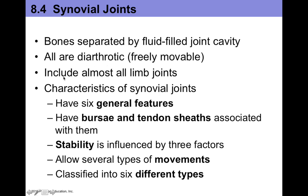Synovial joints include pretty much all the joints of your limbs. We also have specialized synovial tissues like bursa and tendon sheaths that are associated with tissues that move a lot. In terms of their stability, they're influenced by three major factors. Remember, synovial joints are highly movable, which means they're also less stable.